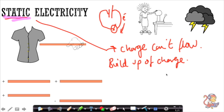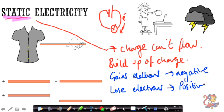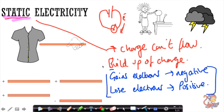The two opposites of charge are positive charge and negative charge. Electrons are negatively charged, so if an object gains electrons it will become negative. On the other hand, if an object loses electrons it will become positive. This is a really key thing to remember for static electricity: gaining electrons makes an object negative, and losing electrons makes it positive.